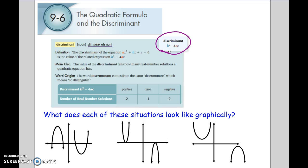And if you plug into b squared minus 4ac and you end up with a positive number, you know that you have two solutions. If you plug in and you end up with a zero, you know that you have one solution. And if you plug in and end up with a negative number, you know you have no solution or zero solutions.